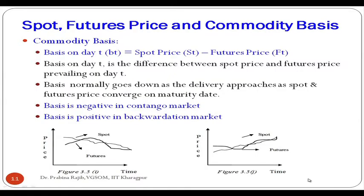Looking at the graph shown in this slide: at one point in time, the spot price is higher than the futures price — this is a backwardation market. After some point, futures become more than spot — this is a contango market. Spot and futures prices can move from contango to backwardation or vice versa before contract maturity, but as the contract matures, both spot and futures prices converge, leading to zero basis.